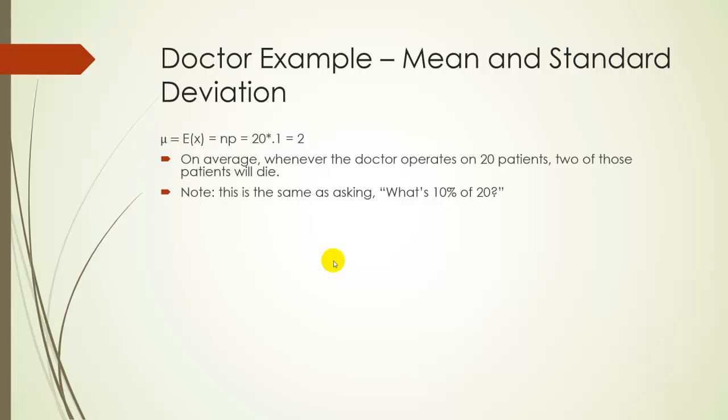And as far as interpreting this, we're saying that when a surgeon or a doctor operates on 20 patients, we expect on average two of those patients to die. Of course, it's very possible that 18 of them die or maybe none of them die. But on average, when we do this, we expect two. The standard deviation, just multiplying 20 times 0.1 times 0.9 gives you 1.8. And then taking the square root of that will give you about approximately 1.3.